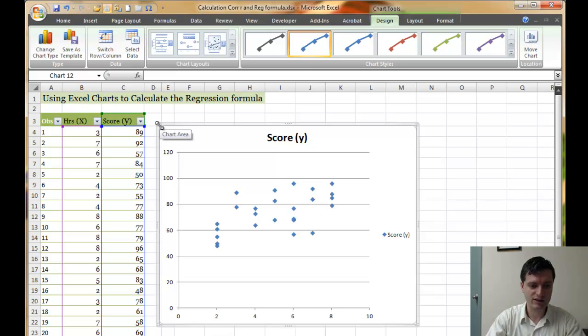Independent variable is in the x-axis. If you see 0 and 10 is the hours studied. And then 0 to 120 is the score that the student actually got by using the number of hours that they studied.